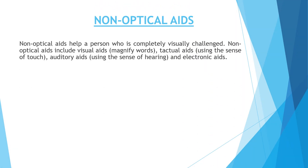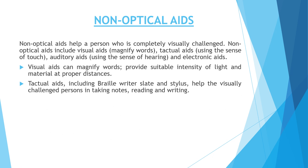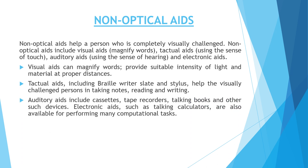Non-optical aids help a person who is completely visually challenged. Non-optical aids include visual aids, textual aids, auditory aids, and electronic aids. Visual aids can magnify words, provide suitable intensity of light, and place material at proper distances. Textual aids use the sense of touch to learn — they include the Braille writer, slate, and stylus. These aids help a visually challenged person in taking notes, reading, and writing.